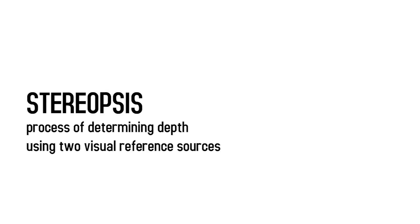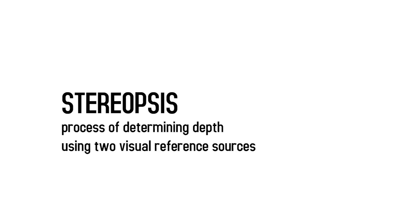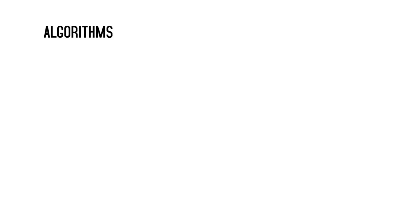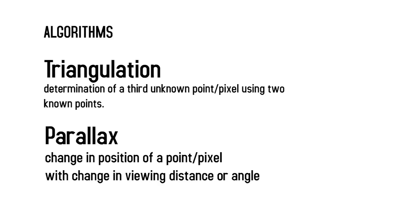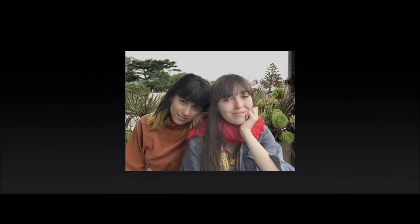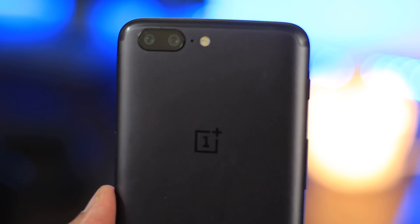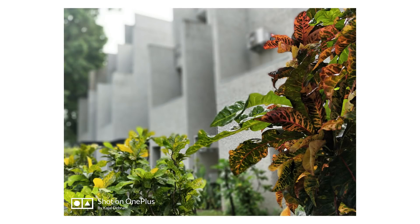The dual camera technique is similar to how our eyes work — stereopsis. The two cameras, having different lenses of different focal lengths, take individual pictures, and then by a set of algorithms involving triangulation and parallax, both compare the two pictures, identify common points, and create a depth map for the image, and add blur layers to the background. That's basically how Apple does it with their iPhones, and any other phone with a wide-angle and a telephoto lens like the OnePlus 5 or the Mi A1 use the same technique.